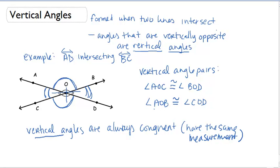Vertical angles are always congruent. In congruent, we use the symbol with an equals with a squiggly line on top. That symbol stands for congruent.